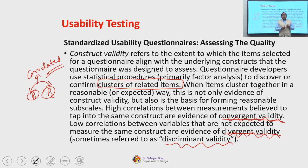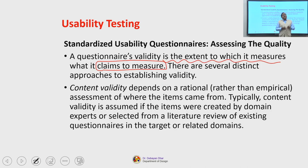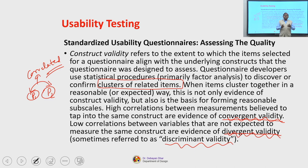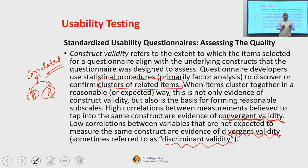To summarize, measurement of validity can be carried out in three ways: content validity, which is primarily rational in nature and not empirical; criteria-related validity, which can be assessed by Pearson's coefficient; and construct validity, which is based on how sub-parameters tend to correlate with the major parameter.